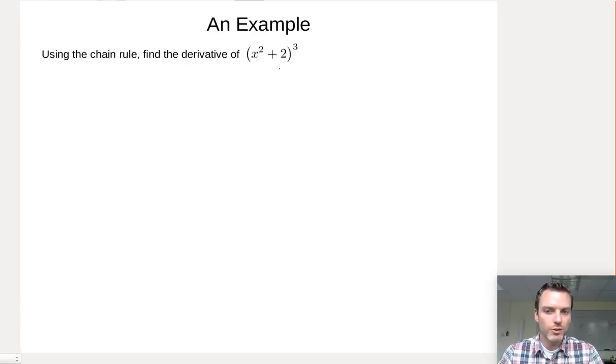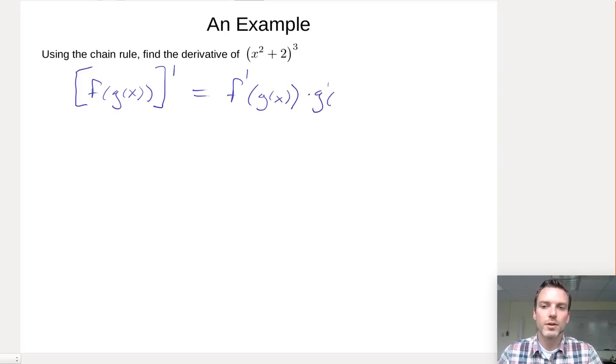Now, let's actually differentiate this example. Recall the chain rule: if I have a composition of functions, so f composed with g, the derivative of that is the derivative of f composed with g times the derivative of g. In order to do this, I need to identify what the f and the g are. In this case, my f of x is x cubed. My g of x is x squared plus 3.